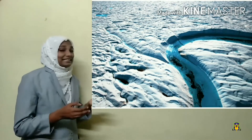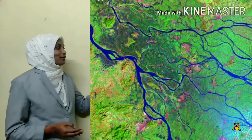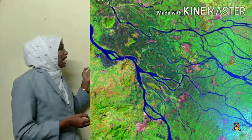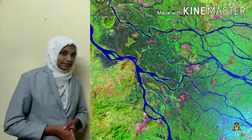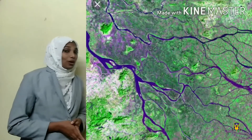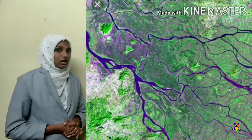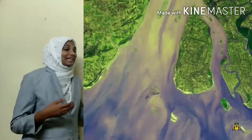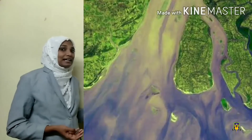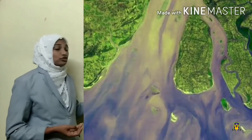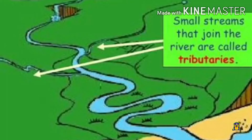During its journey, a river grows its size as other rivers join it in the hills. And some may join the main river in the plains.